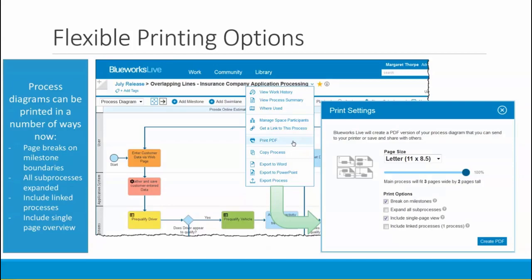Now let's look at new options available for printing your process diagrams. For those who use printouts taped to walls for process discovery and analysis, it can be a pain to piece all the pages back together. We've introduced several new printing options. In the PDF print dialog, there's a new option to page break on milestone boundaries so page breaks don't go through the middle of activities. There's an option to expand all embedded sub-processes so you don't have to remember to expand them before printing. There's also an option to include a single page diagram overview to help piece together pages, and an option to include link processes.